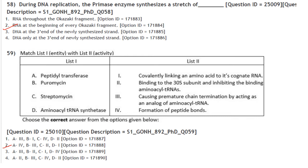Match translation-related terms: Peptidyl transferase — formation of peptide bonds; Puromycin — causes premature chain termination by acting as an analog of aminoacyl-tRNA; Streptomycin — binds to the 30S subunit and inhibits binding of aminoacyl-tRNAs; Aminoacyl-tRNA synthetase — covalently links an amino acid to its cognate tRNA. Answer is option 2: A4, B3, C2, D1.